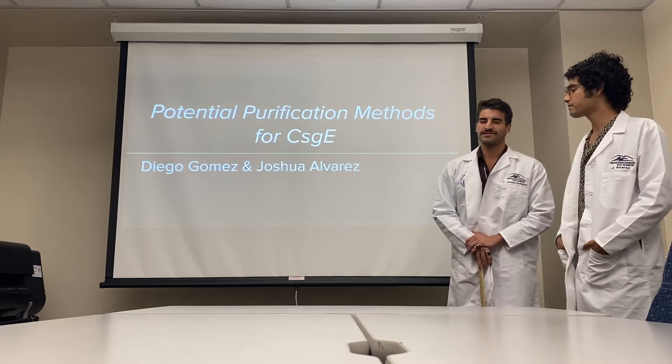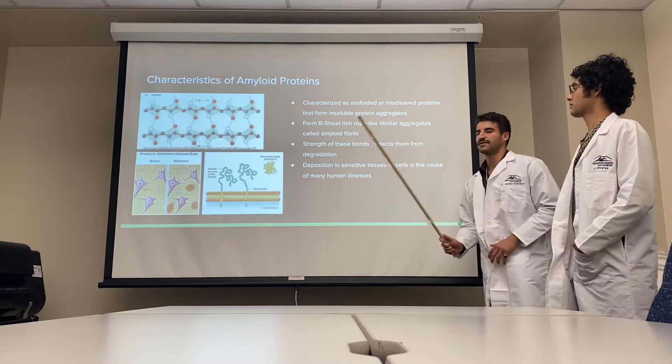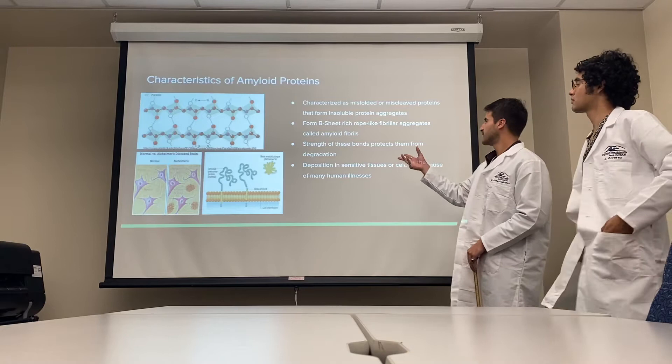We start off by characterizing amyloid proteins. They're characterized as misfolded or miscleaved proteins that have a propensity to aggregate with each other. This is only possible due to the entirely beta-sheet structure of these proteins, which makes it very easy for them to stack on top of each other and form non-covalent bonds.